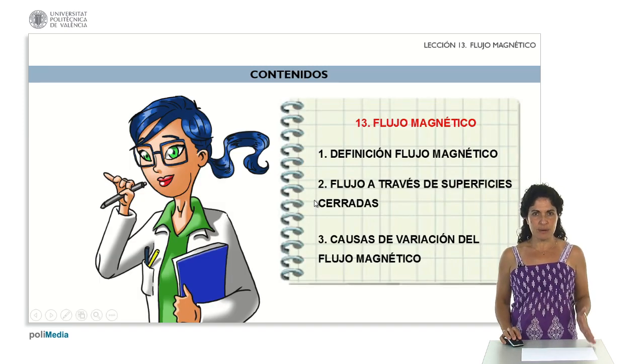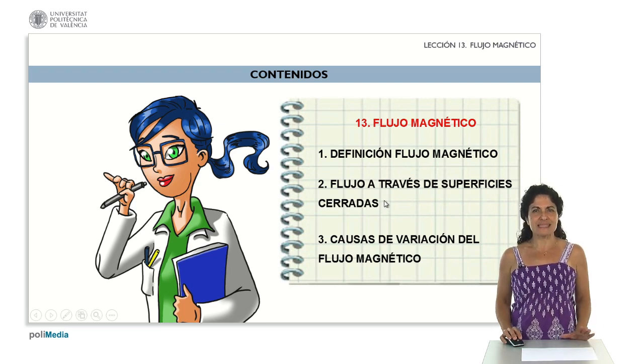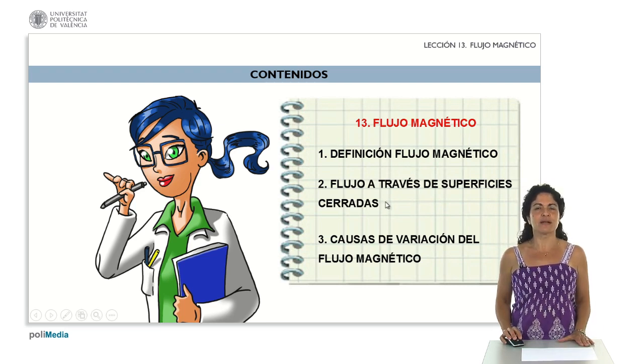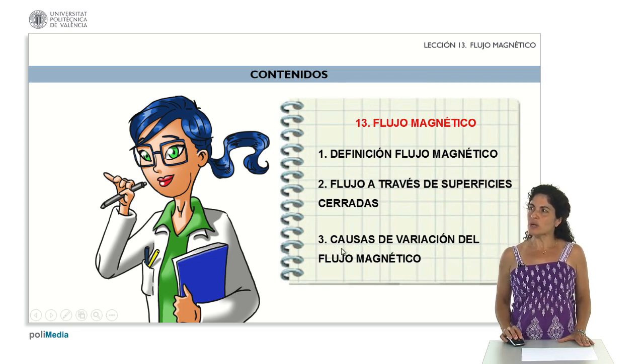Starting with what we are going to do in this class, defining Magnetic Flux, we will start by looking at how to calculate it and seeing what kind of surfaces it makes sense to calculate Magnetic Flux through. Finally, we will analyze what are the possible causes of Magnetic Flux variation.